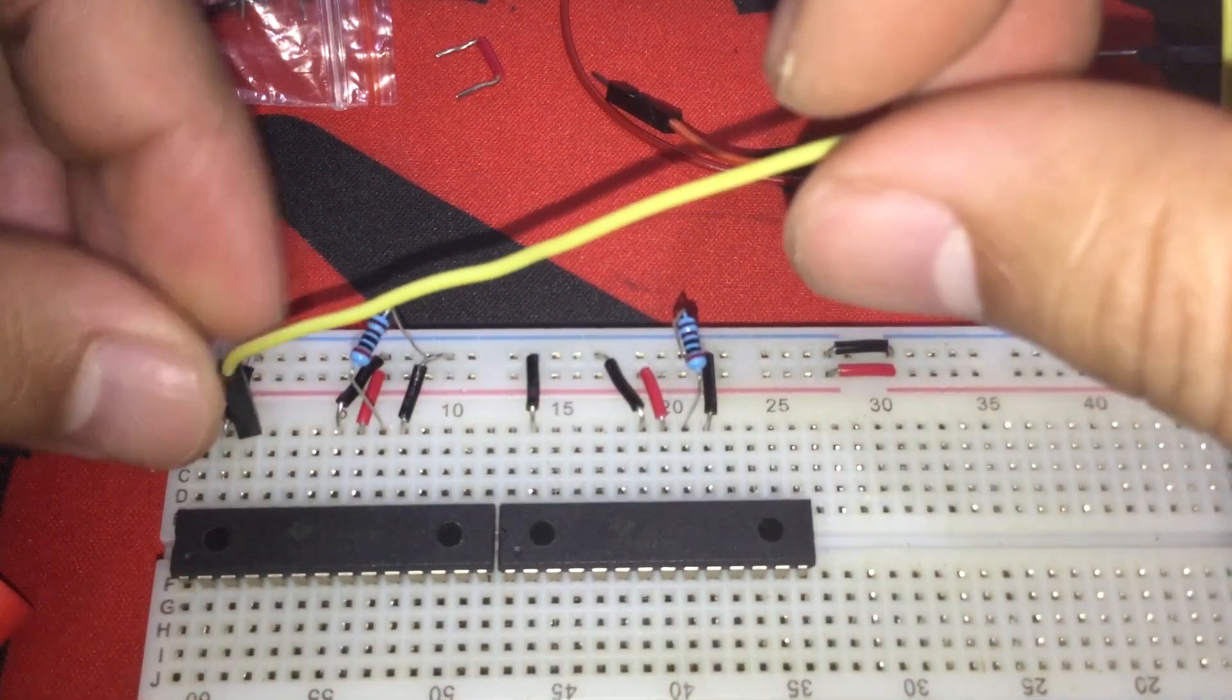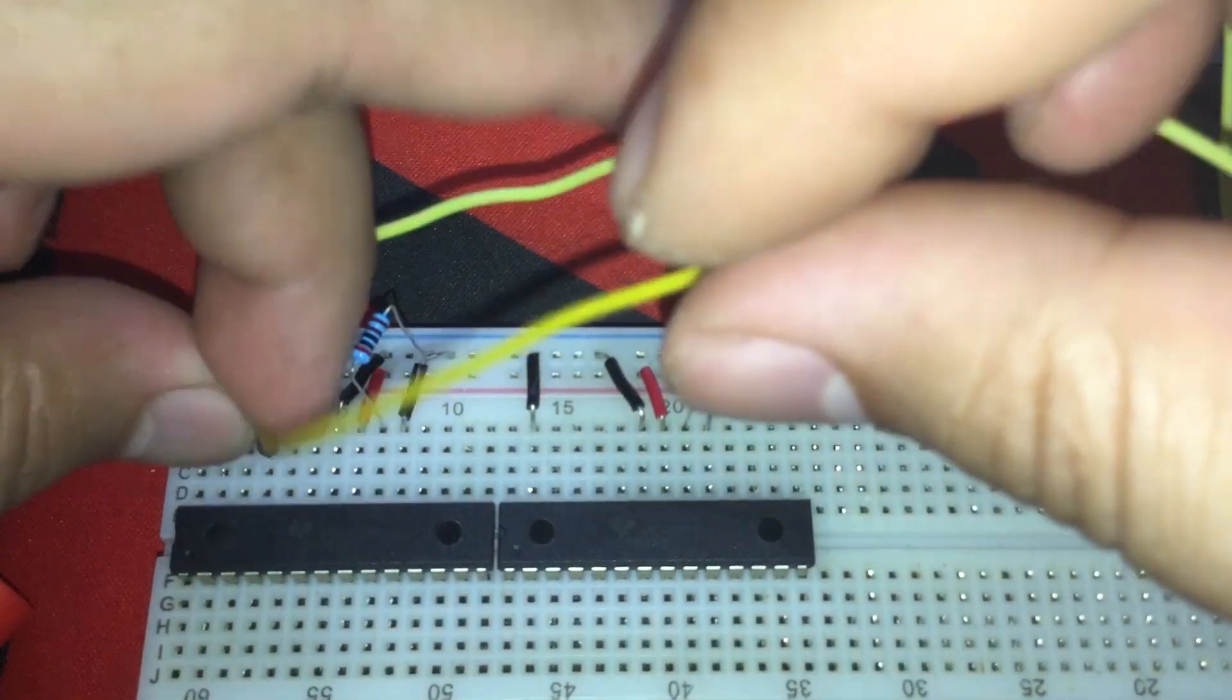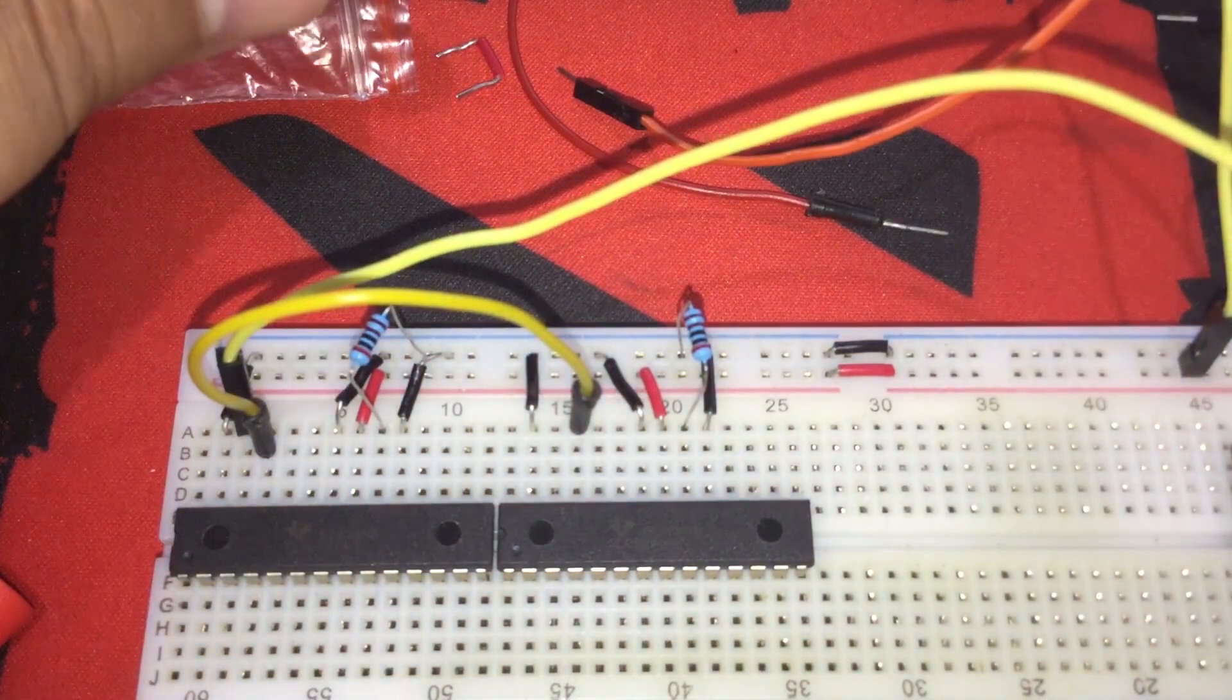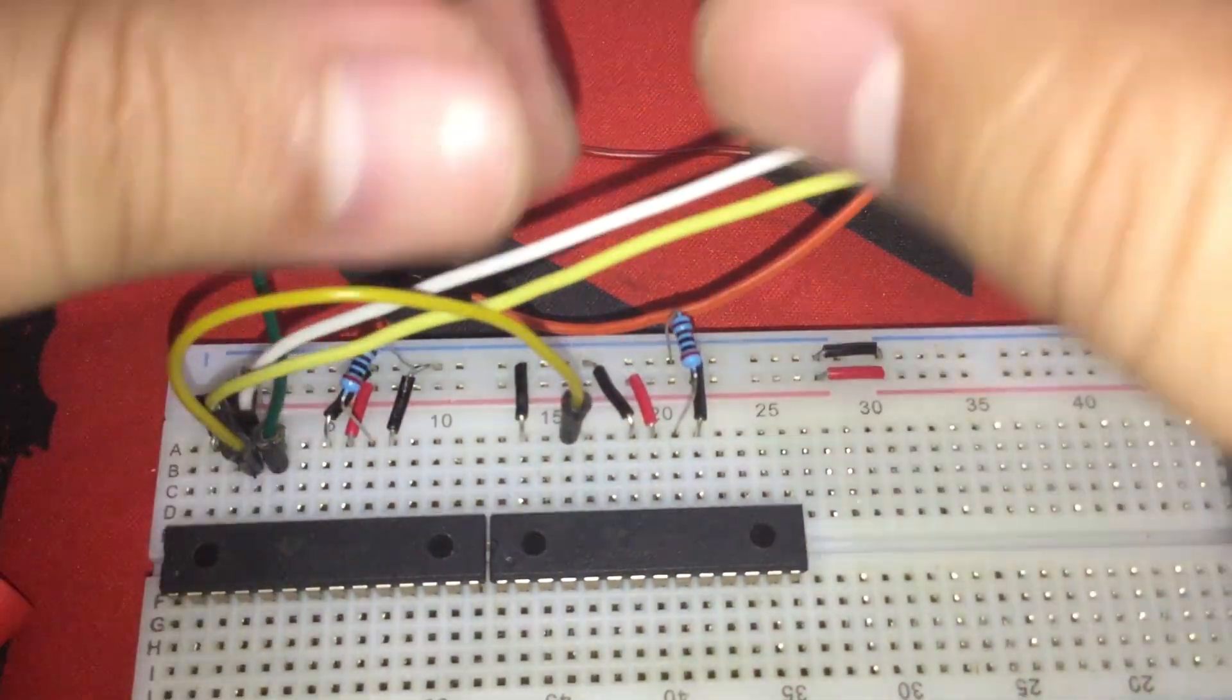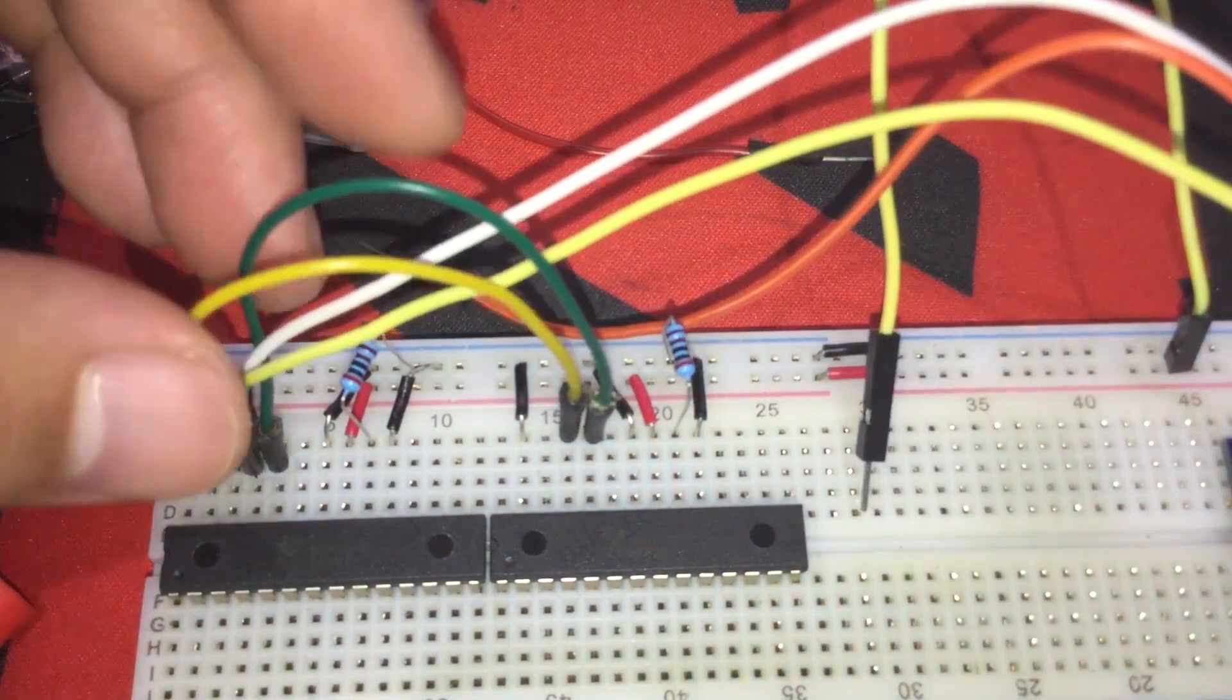Okay, serial data input should be right here. SCLK from the first IC to the SCLK of the second, then to Arduino. X-LAT from IC1 to X-LAT of IC2, then to Arduino.